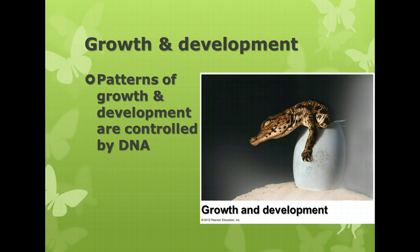Third, we have growth and development. All living things grow and develop, whether they're a single cell or multiple cells. When a single cell grows to a certain size, it has to divide. If you're a multicellular organism, the more cell divisions you have, the larger you end up getting. Some cells will not live, others will be replaced. Even though you started out as a single fertilized egg cell, and the first cells that divided were all the same kind, you're now made of many different kinds of cells. All of those patterns of growth and development are controlled by the DNA found in the nucleus of your cells, and that holds true for all living things.